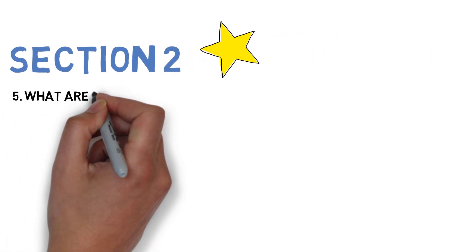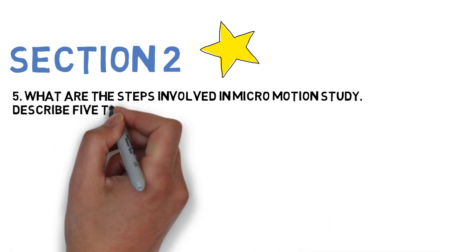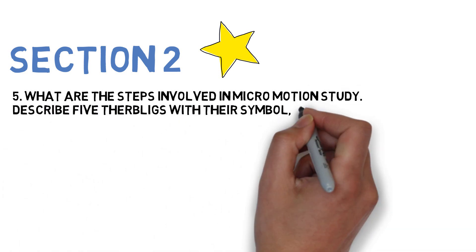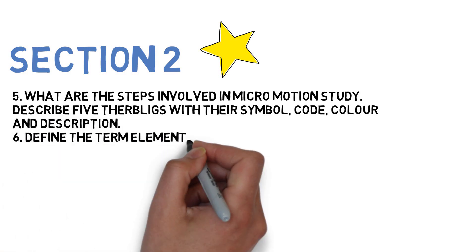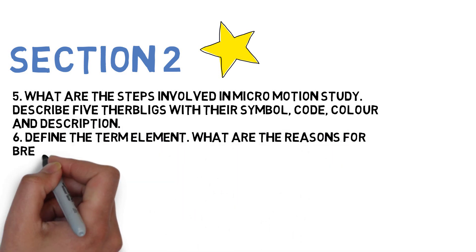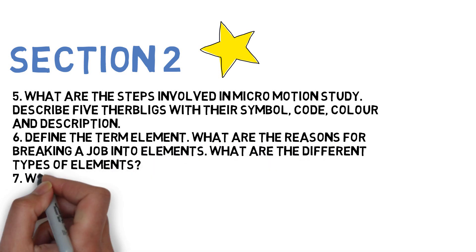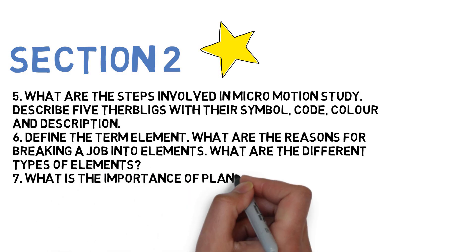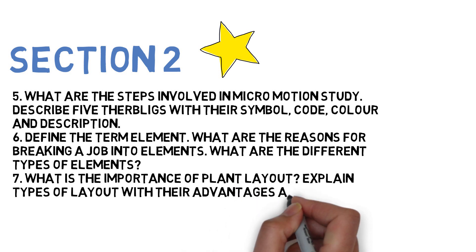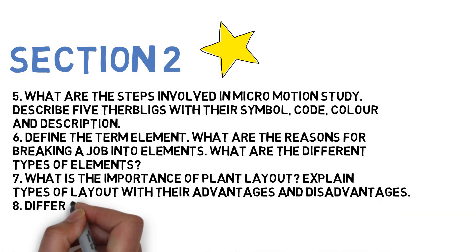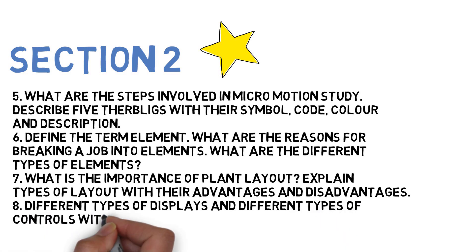Now section two. First question: what are the steps involved in micro motion study — describe five therbligs with symbol, code, color, and description. Second: define the term element, what are the reasons for breaking a job into elements, and what are the different types of elements. Third: what is the importance of plant layout and explain types of layouts with advantages and disadvantages.